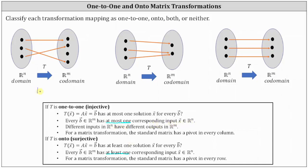Therefore the transformation is one-to-one. However, it's not onto, because to be onto, every vector in our M must have at least one corresponding input vector in our N. So because this third vector does not have a corresponding input, this is not an onto transformation.